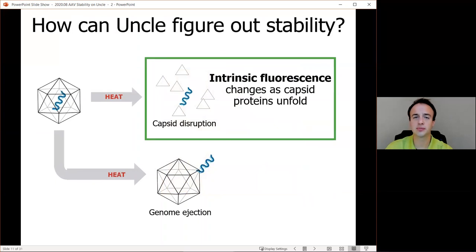So how can UNCLE help figure out that stability? Well, using intrinsic fluorescence, UNCLE can excite the AAV capsid proteins with its 266 nanometer laser and look at the fluorescence from the tryptophan and tyrosine residues to monitor when capsid protein unfolding occurs.